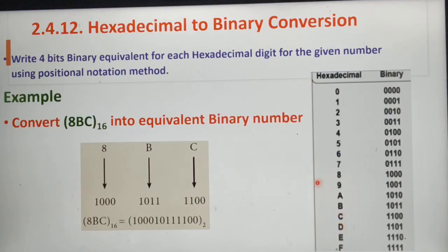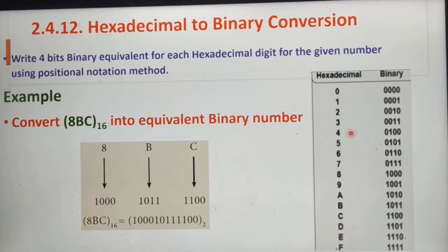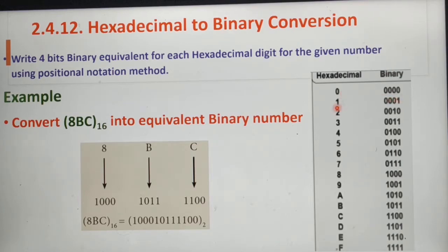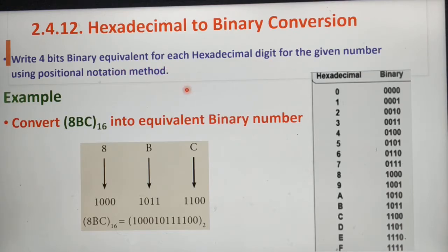Next, we can see how to convert a hexadecimal number into its equivalent binary number. The main important point is each hexadecimal digit must be written in 4-bit binary equivalent. As shown in this table, this table contains all hexadecimal digits from 0 to 9 and alphabets from A to F with their equivalent binary numbers. For example, binary equivalent for 0 is 0000, and for 1 is 0001, and so on. Write 4-bit binary equivalent for each hexadecimal digit using the positional notation method.